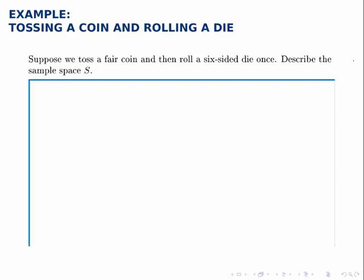Suppose we toss a fair coin and then roll a six-sided die once. Describe the sample space S. Again, the sample space is a list of all the possibilities for what could occur.